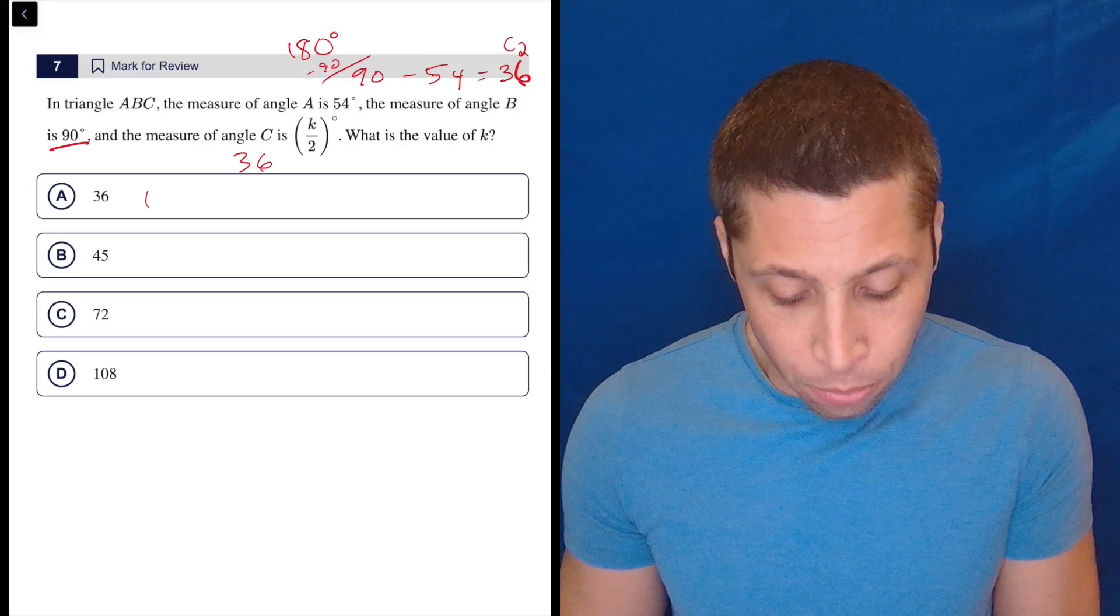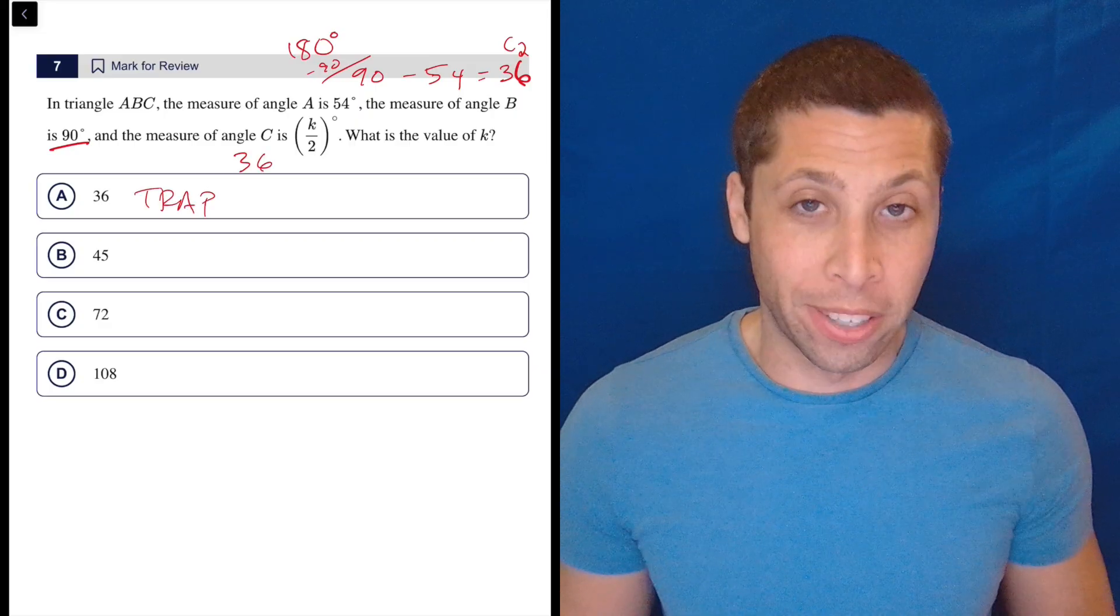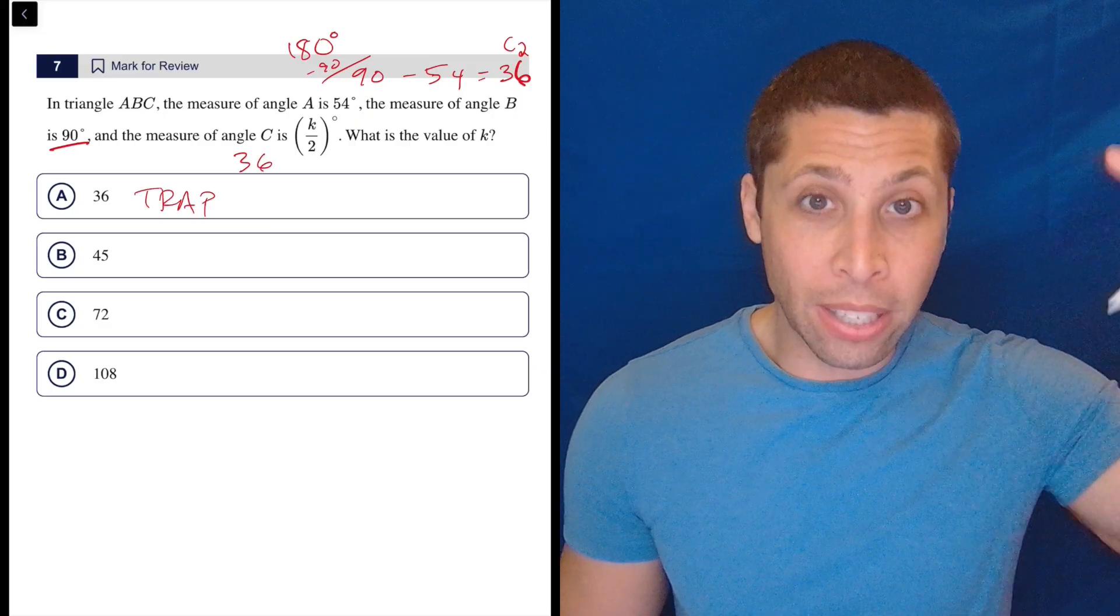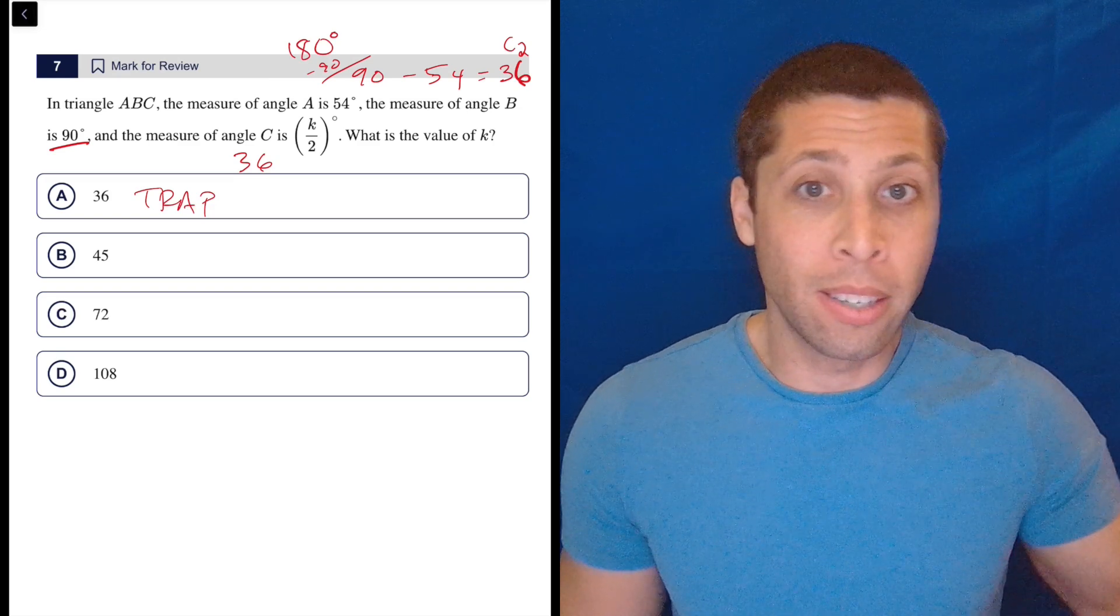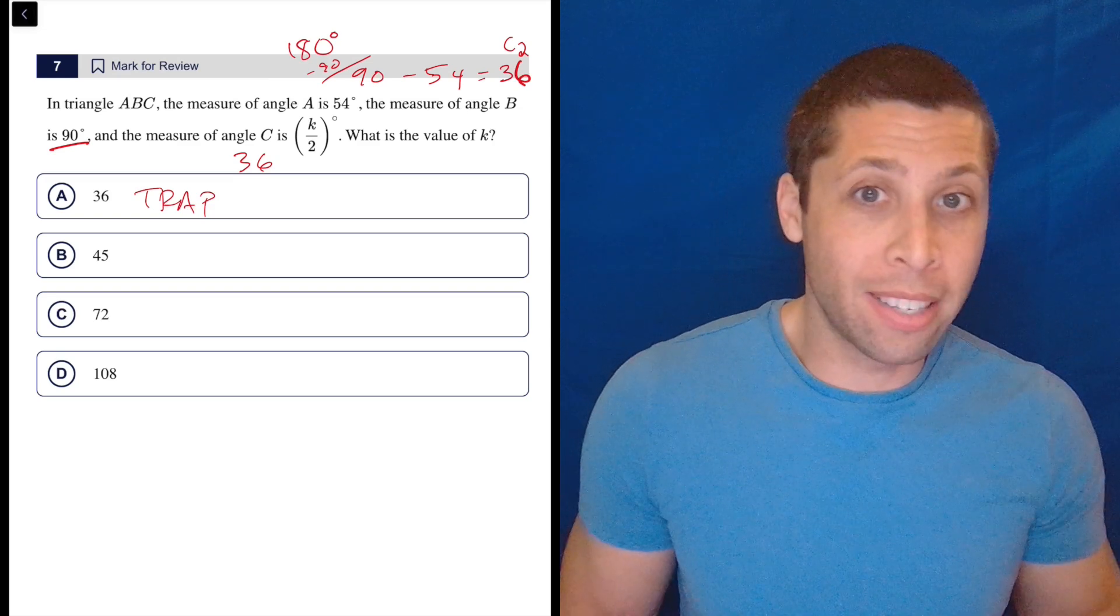So angle C is 36, and what do you know? That's an answer choice because they know that every time you are asked about triangle angles, you are asked to find the missing one, and you just do some subtraction like I did, and you're done.